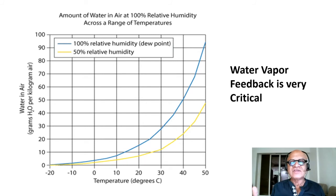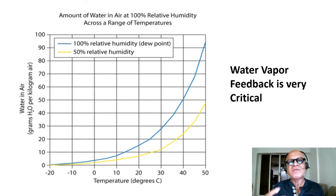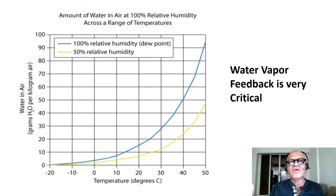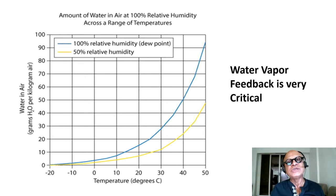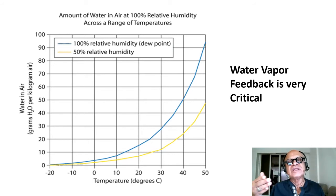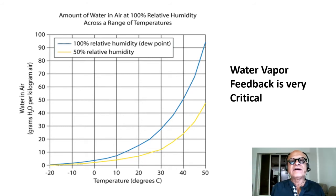As global warming happens, warm air holds more water vapor, which will drive snowfall over glaciers and glacier growth. However, the buildup of glaciers gets slower over time because as cooling happens and glaciation sets in, air gets colder, holds less moisture, and snowfall rates fall.